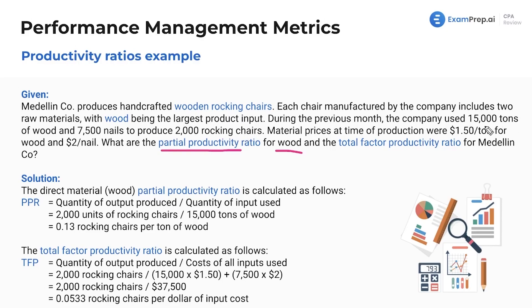Now, is wood measured in tons? I have no idea, but that's what I used for this question — not that it matters. And do you need more materials than wood and nails to make chairs? Possibly — I'm not an expert in producing wooden rocking chairs, so just roll with it. The material prices at time of production were $1.50 per ton for wood — probably not realistic, but we're here to learn how to do these questions — and $2 per nail.